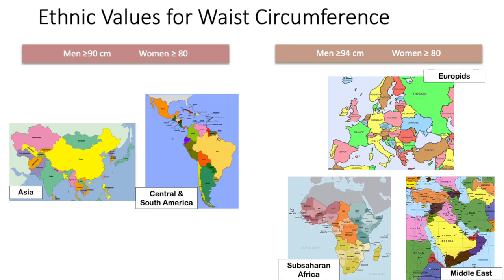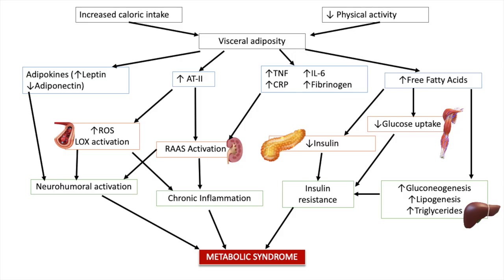It is important to know that there are a few differences regarding waist circumference for different ethnicities. People from Asian, Central, and South America have a lower cut-off value compared to the standard: 90 cm for men and 80 cm for women. For people from Europe, the Middle East, and Sub-Saharan Africa, the cut-off for men is a little bit higher at 95 cm, but for women it remains the same at 80 cm.